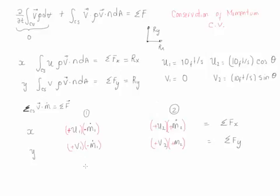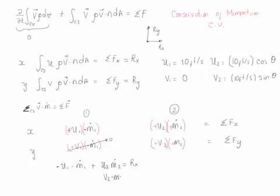Now let's cancel terms that are not needed. The only velocity that cancels is v₁, since there is no y-component in the incoming flow — it equals zero. The x-axis equation becomes: negative u₁ṁ₁ plus u₂ṁ₂ equals the summation of forces in x, which is Rx. The y-axis equation involves only ṁ₂ times the y-velocity at point 2, equal to Ry.